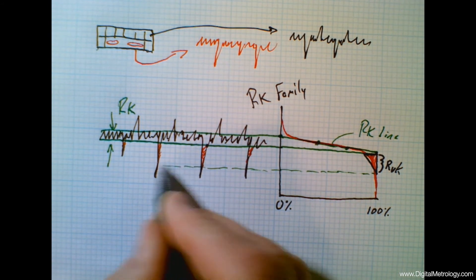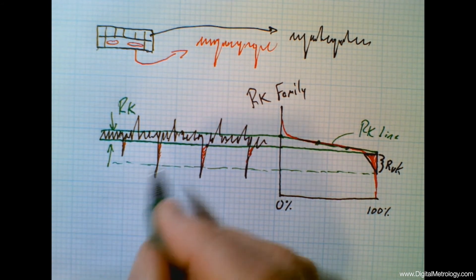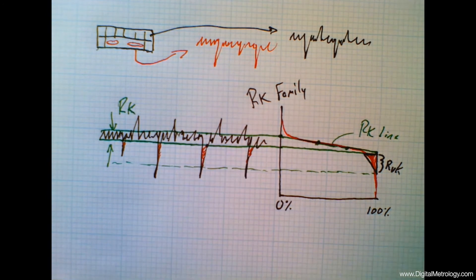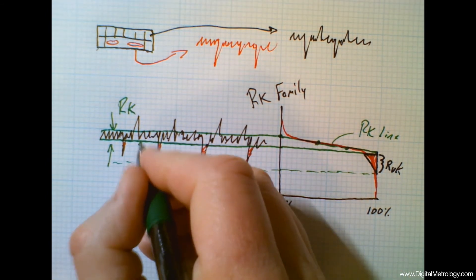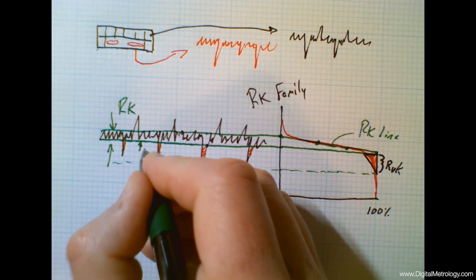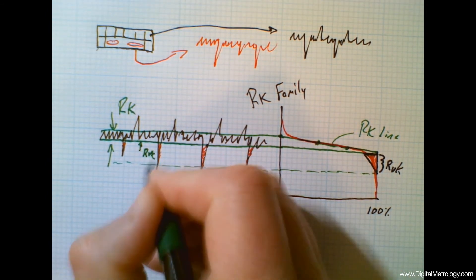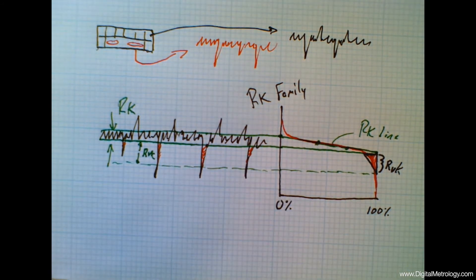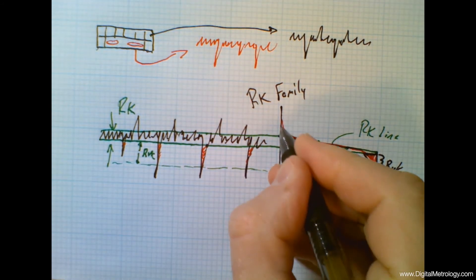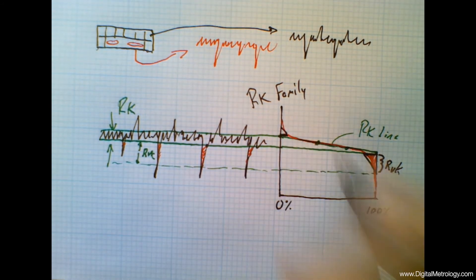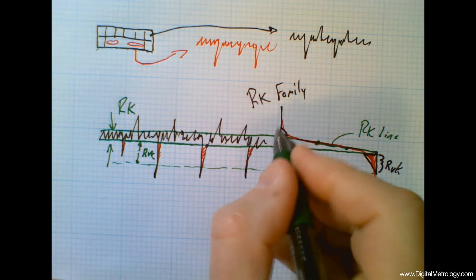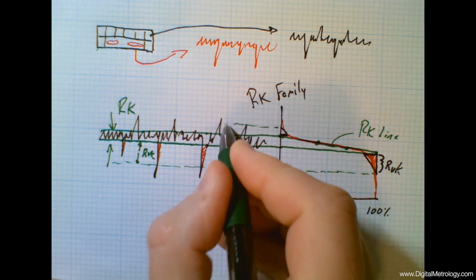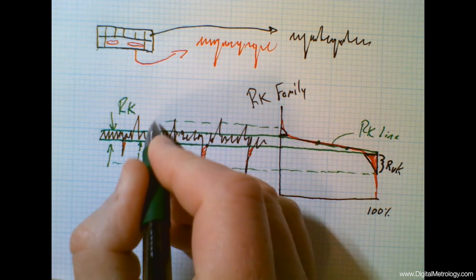So we have now broken our surface into the running surface RK, and here is the RVK part of the surface. Similarly, we're going to generate a triangle up here in the peak world and have a height for the effective peak height.